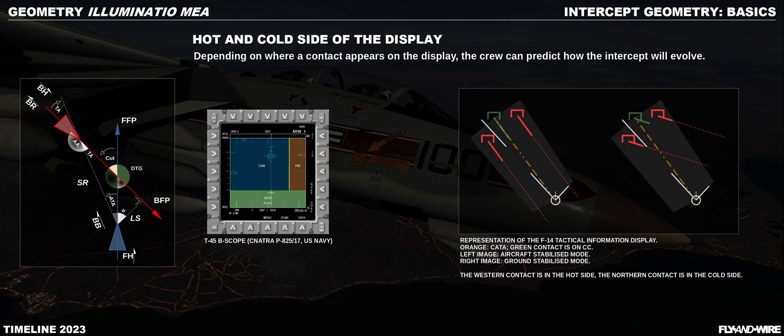The first concept we discuss is the hot and cold side of the display. Hot and cold are a way to describe the changes of geometry over time. Hot means that the TA is decreasing; cold means that it is increasing. This is fundamental, as we may have situations where the TA is too high for missile shots, for example, and we have to correct right away — and we can do that immediately if we know where our nose should point.